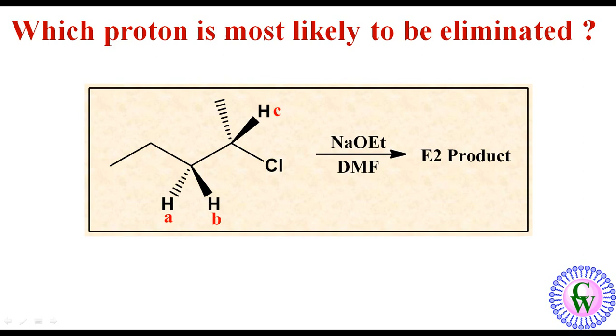Hello friends, in this video we are going to solve a problem based on E2 reaction. In this we have to find which of the labeled protons A, B, and C is most likely to be eliminated.